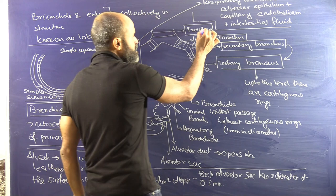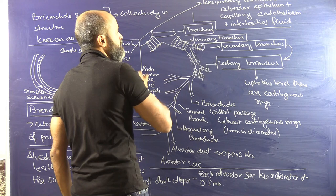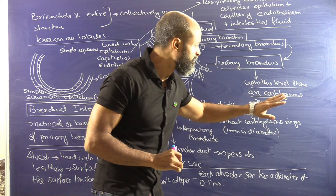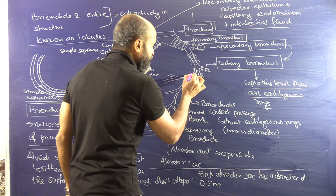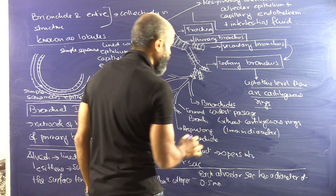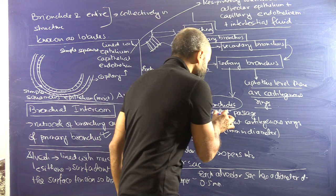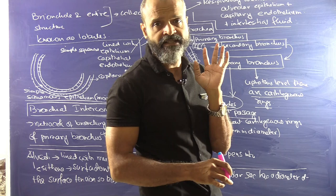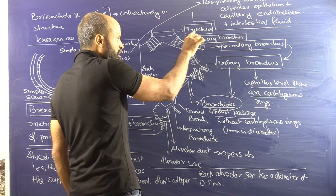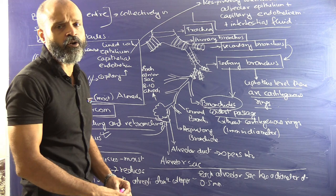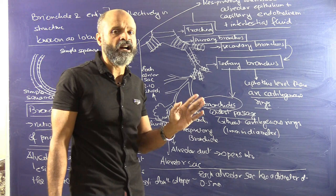An important point: in each of these divisions — from the trachea to the primary bronchus, secondary bronchus, and tertiary bronchus — we have cartilaginous rings. However, when the tertiary bronchus divides further into bronchioles, there are no cartilaginous rings. So the bronchioles are the widest passage in the entire system that does not have cartilaginous rings. They are about 1 millimeter in diameter.